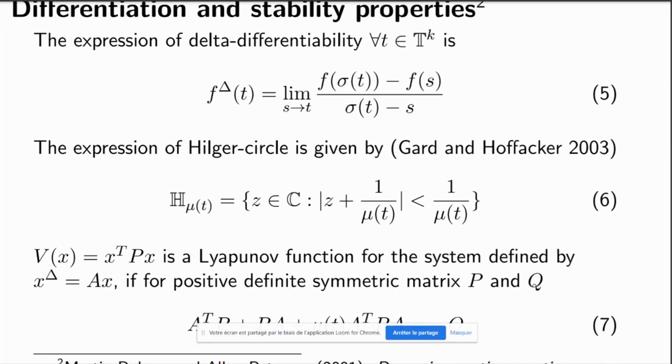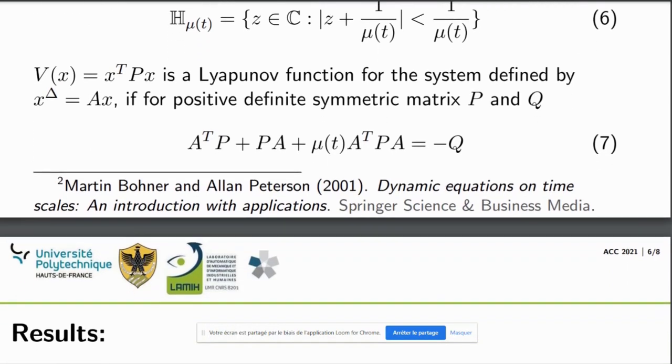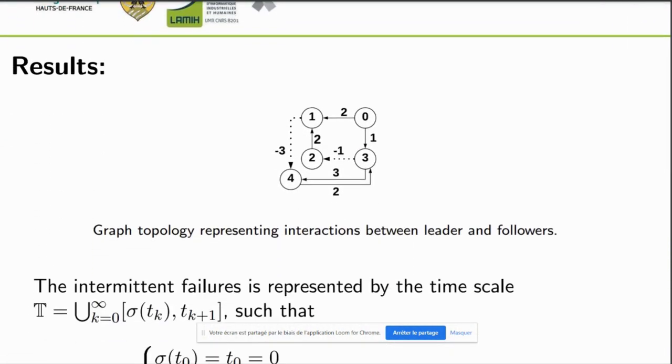Here, we have the definition of delta differentiation. We also have the definition of Hilger's circle, which is used to define the Hilger's stability criteria, which is given by equation 6 when mu(t) not equals to 0. When mu(t) equals to 1, we can see the stability condition coincides with that of discrete time stability criteria. By equation 7, we define the Lyapunov function on timescales. Here, in this slide, I show the graph topology which we have used in our paper. 0 is the leader, 1, 2, 3, 4 are the follower agents. The solid lines represents cooperative interaction. The dashed lines represent antagonistic interaction.